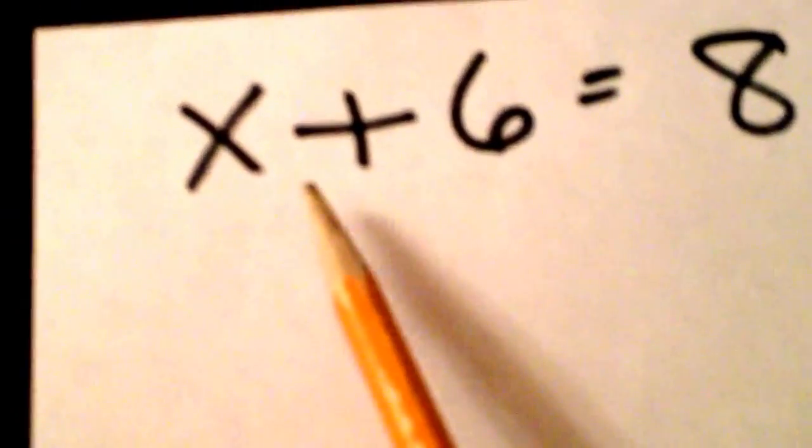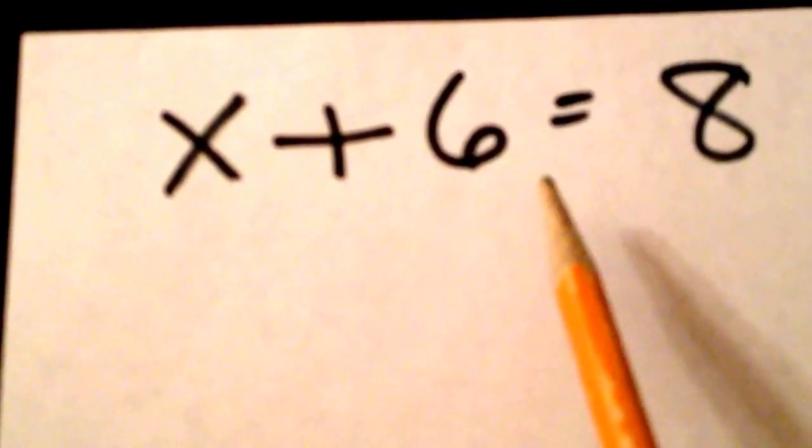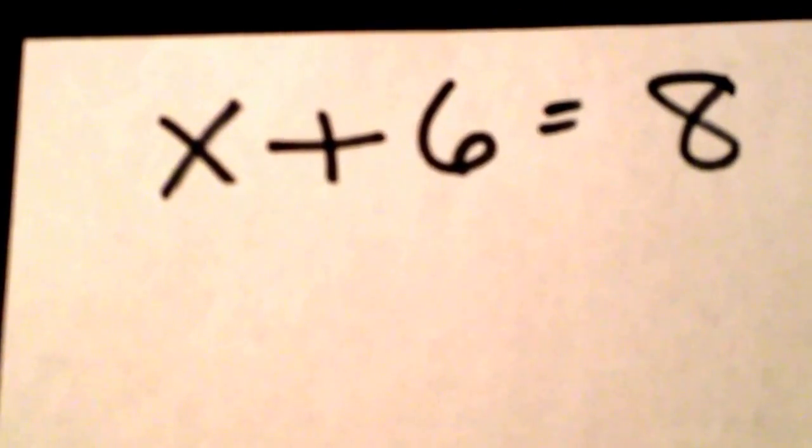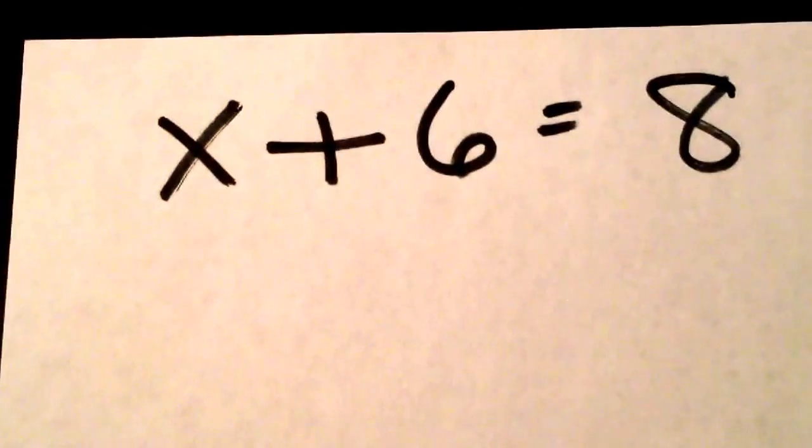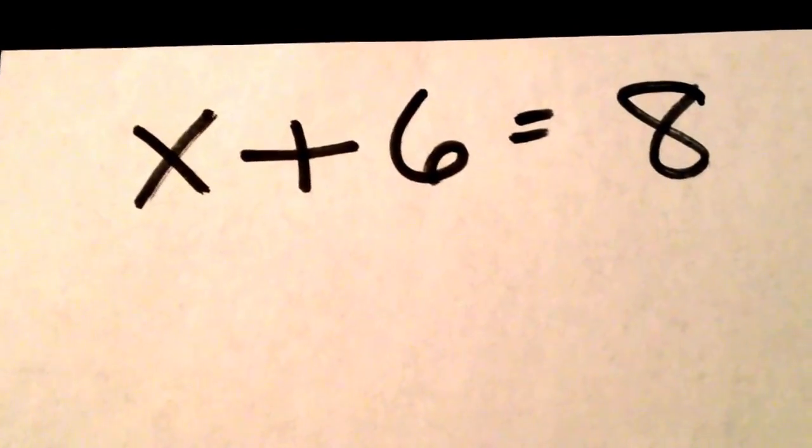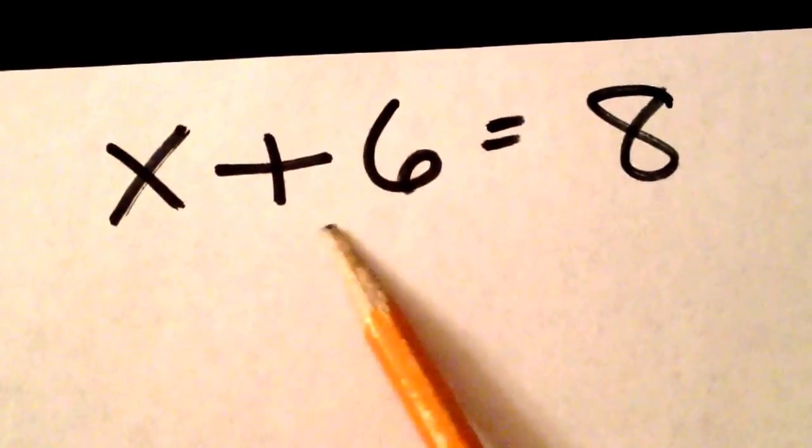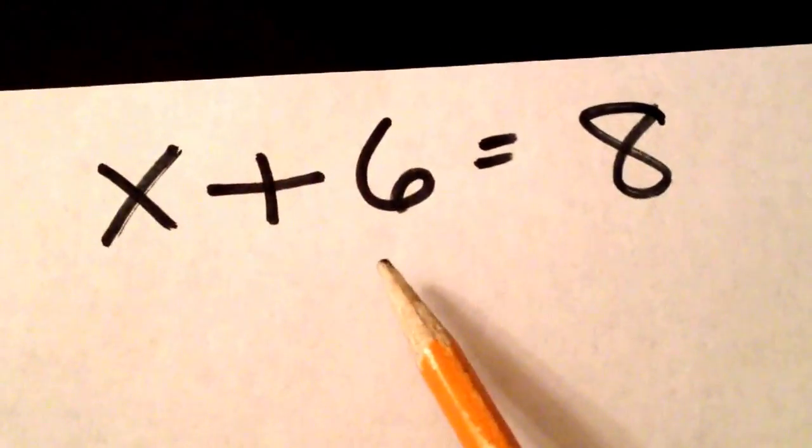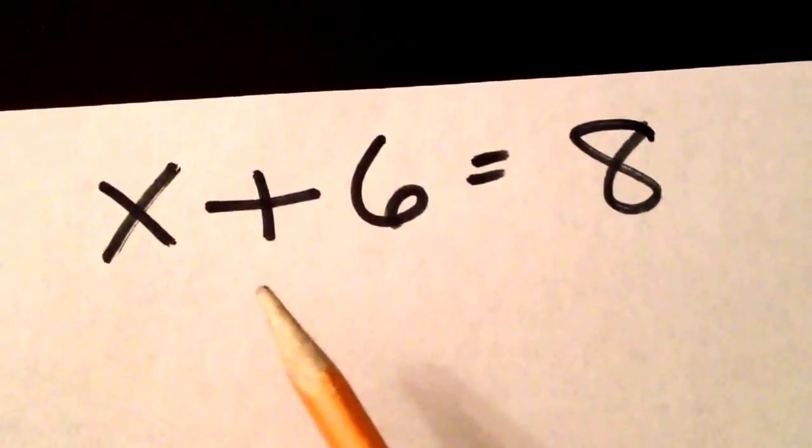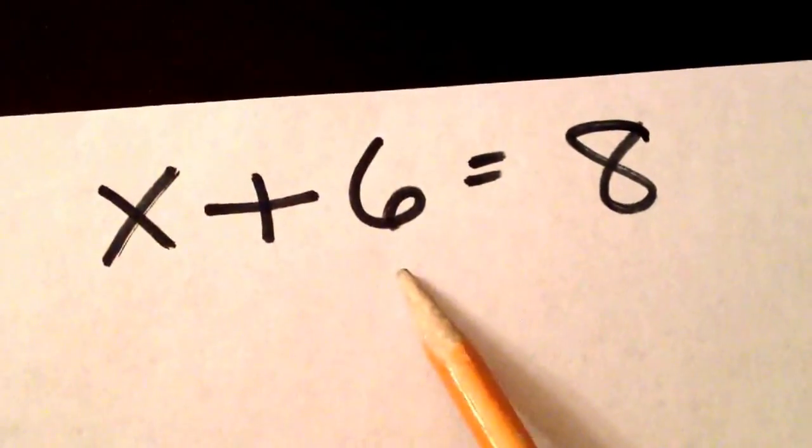So if we look at this first problem, we have x plus 6 equals 8. And we know that when we solve an equation, we want to use the inverse or the opposite operation. So here, what's happening to x is being added to 6.